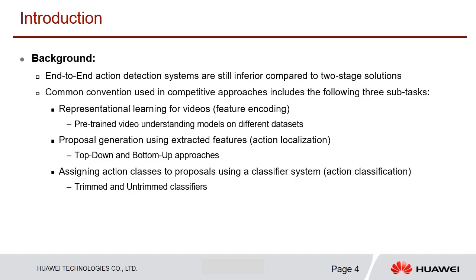The common practice for the two-stage solution involves three subtasks: first, extracting features for the entire video using pre-trained video understanding models from different datasets; second, proposal generation using these extracted features, which can be done using top-down and bottom-up approaches; and third, training classification models to predict action classes for each proposal, which can be done using trimmed or untrimmed classifiers with either trimmed clips or the entire video as input.